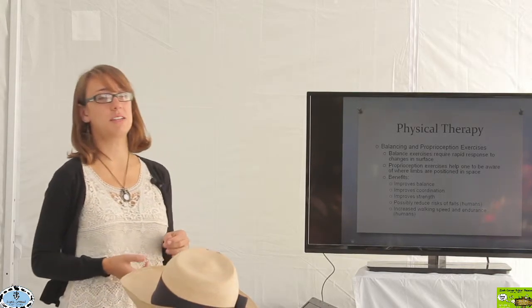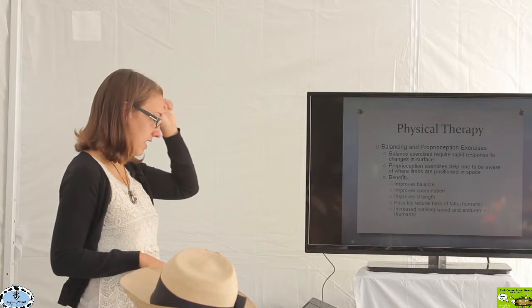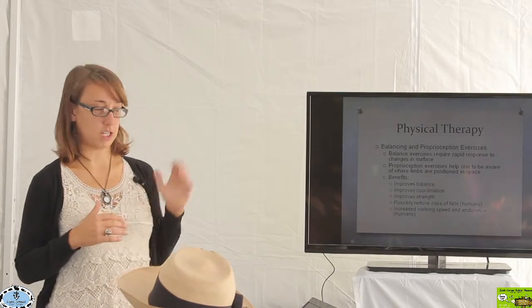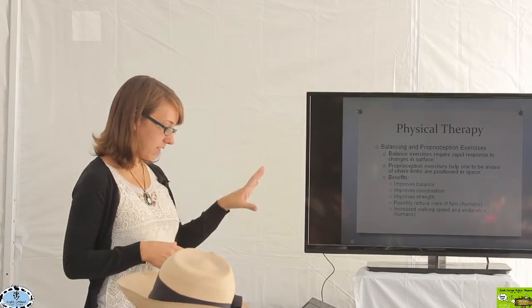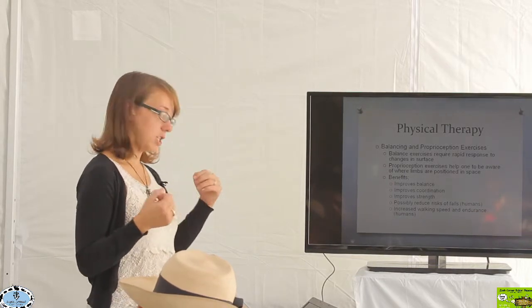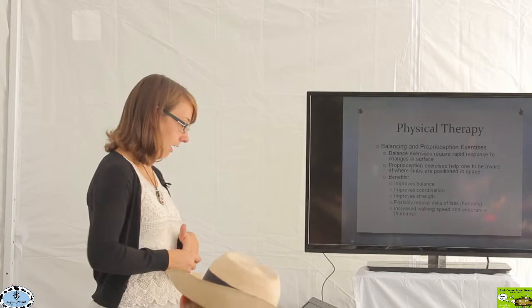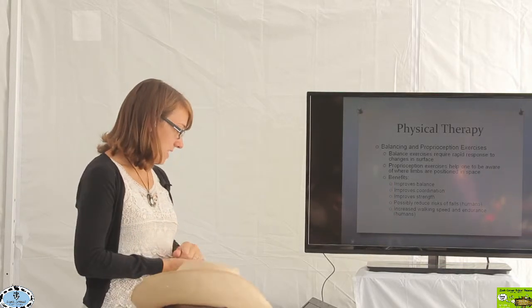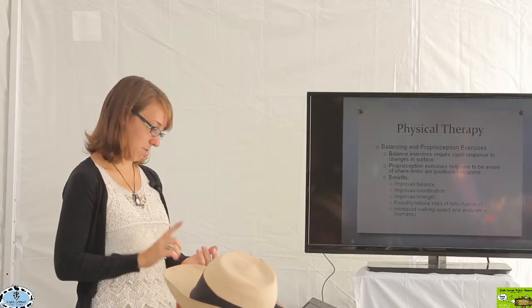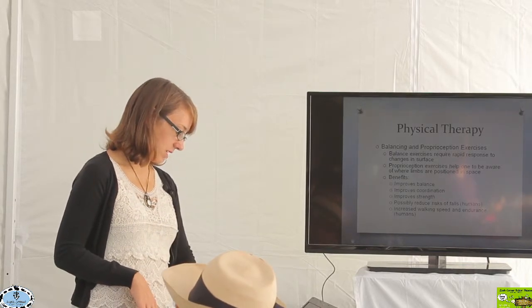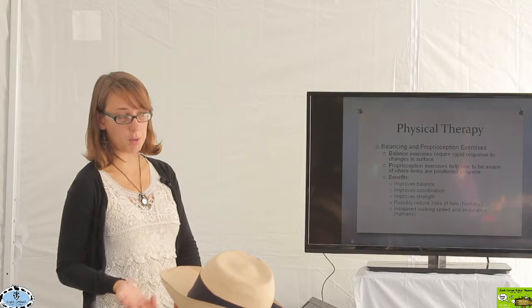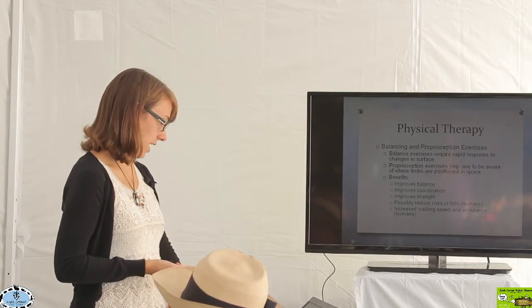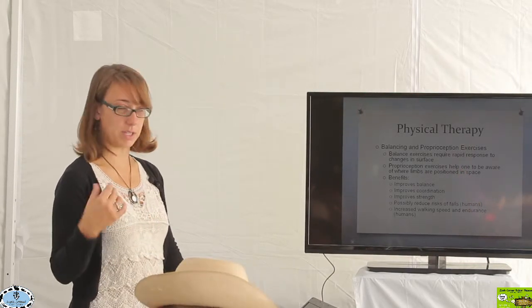Okay, so other exercises that can be done: balancing and proprioception exercises. These are ones where we're really trying to re-educate those muscles again. We're thinking about the neuromuscular re-education when we're dealing with these exercises. So balance exercises require sort of a rapid response to a change in a surface that we balance. Proprioception exercises helps an animal to be aware of where their limbs are in space. So lots of different benefits again: improves balance, coordination, strength. It reduces in humans the risks of falls, probably has similar effects in rabbits, and in humans it also improves their ability to have a better walking speed, better endurance. Probably the same thing in rabbits.